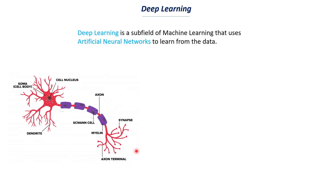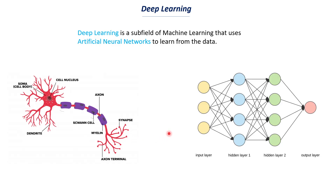Each neuron in our body is connected to other neurons as well. The dendrites of one neuron are connected to the axon terminal of another, and this network goes on. These neurons play a critical role in how information is passed to our brain and how commands from the brain are sent to different parts of the body. Similarly, the artificial neural networks we use are inspired by these biological neural networks.